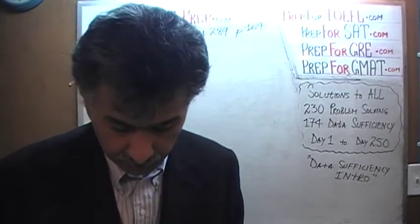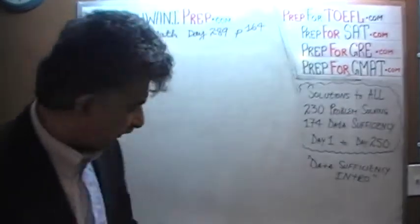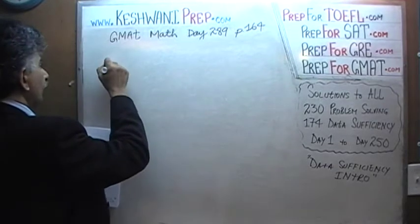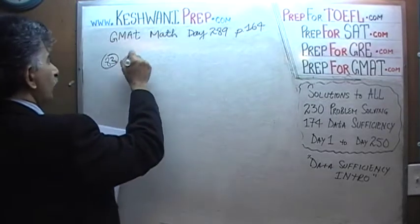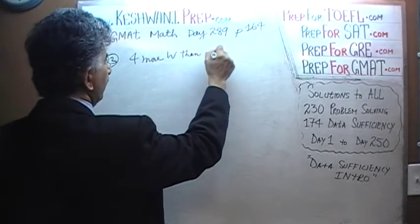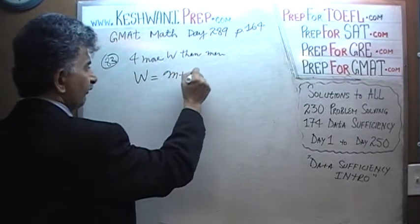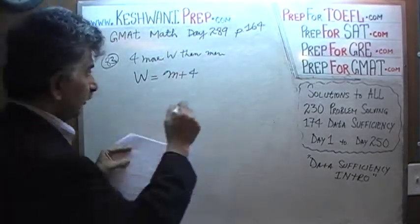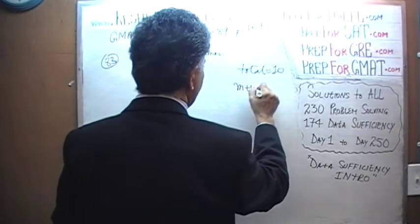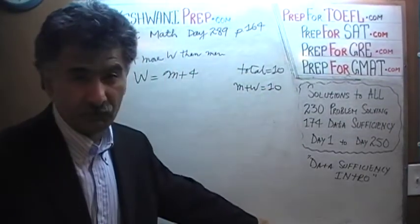Please turn to page 164. The very first problem is number 83. We are told that there are four more women than men, so the number of women is whatever the number of men is plus four more. We are also told that the total is 10, which means men plus women equals 10. The question simply is: how many women do we have?